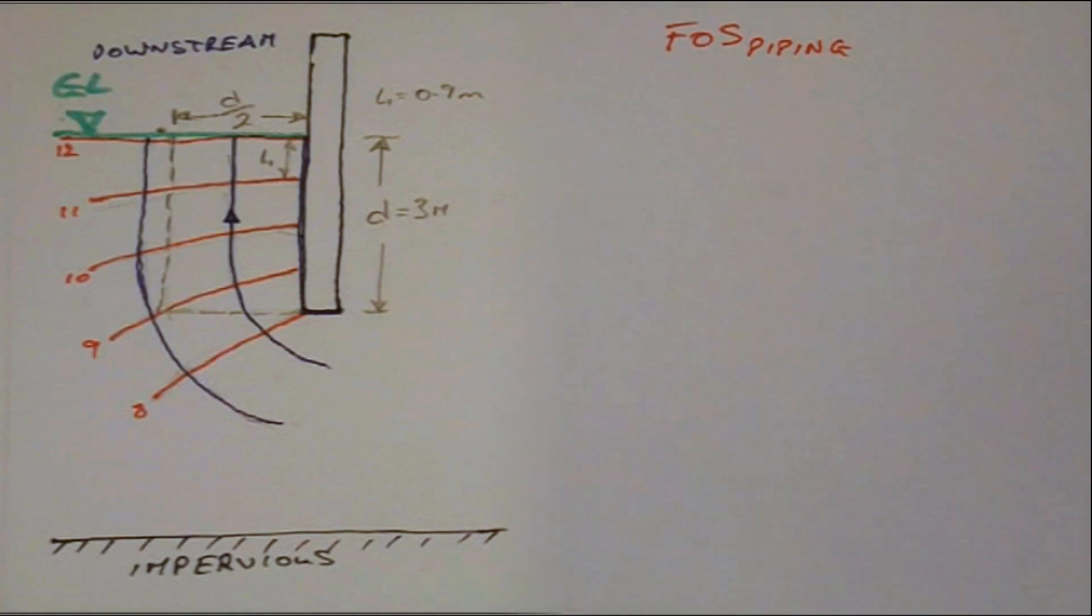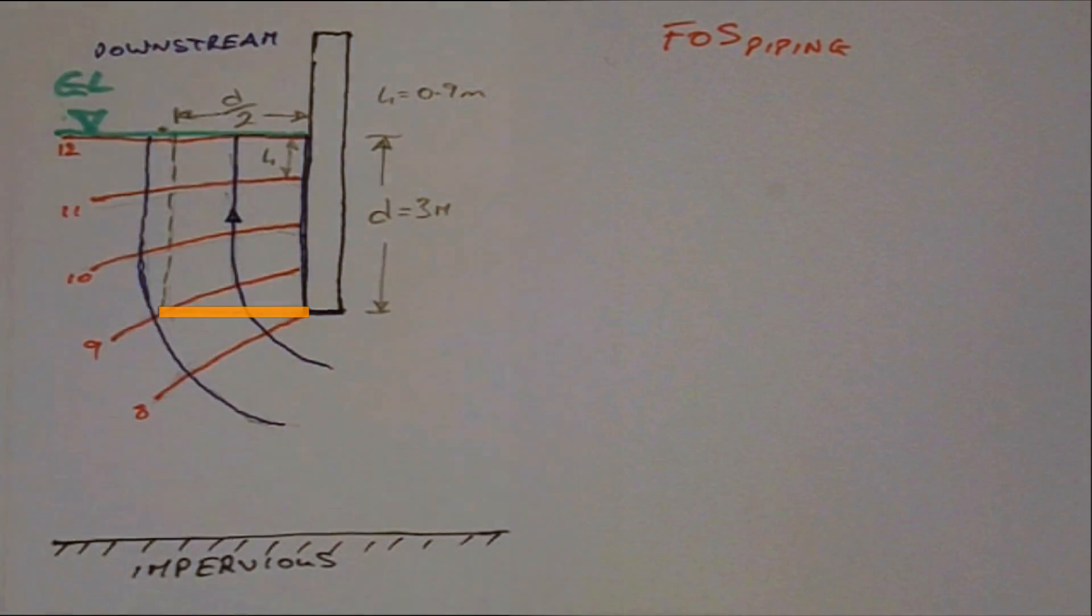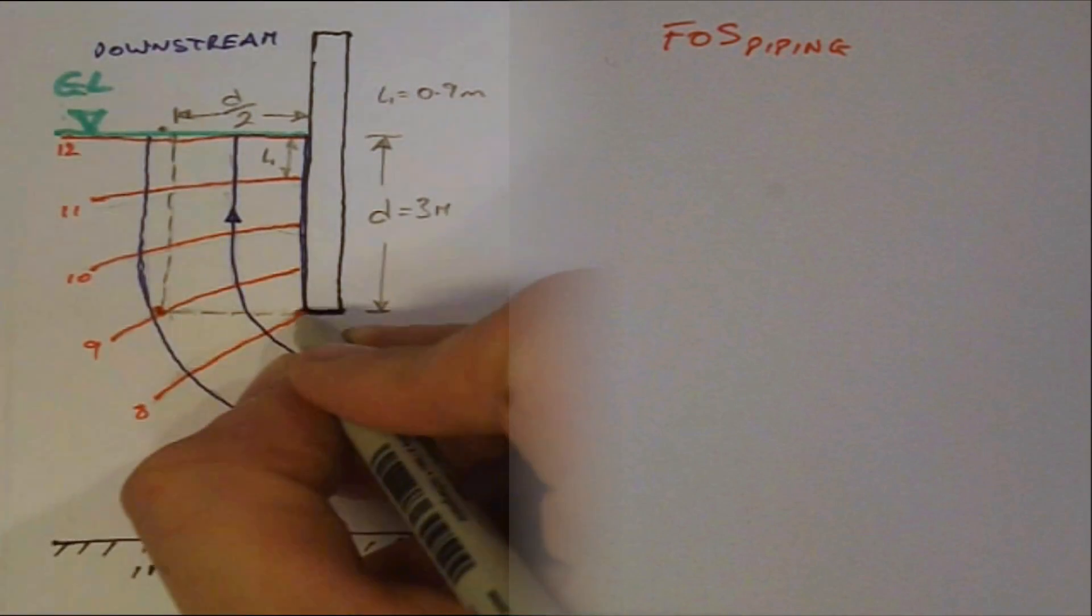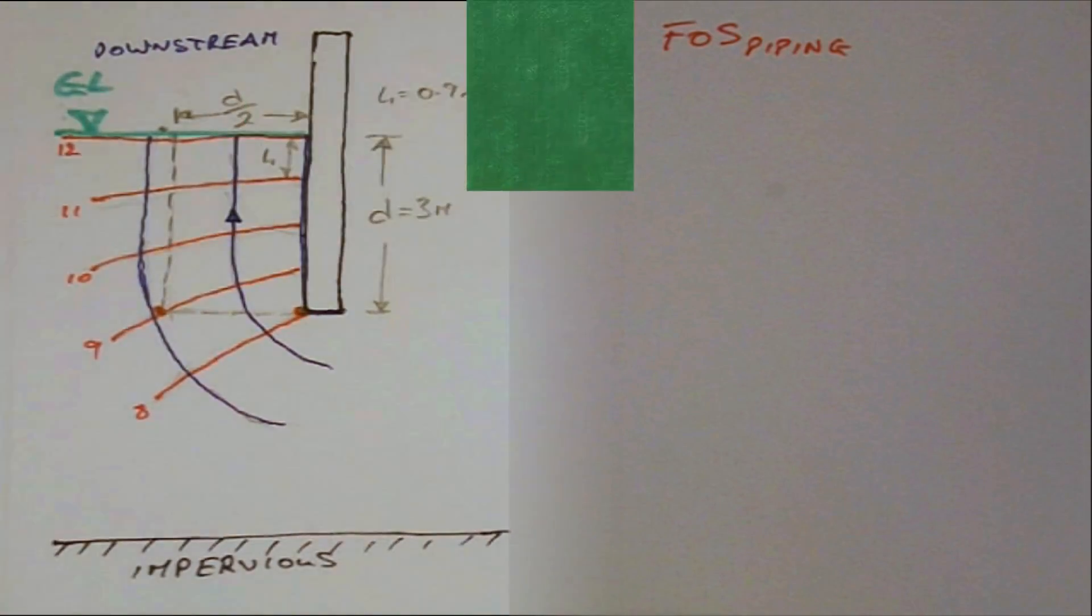We need to calculate the mean head HM acting along the base of the prism. We note from the enlarged detail that the lower outermost corner of the prism intersects equipotential line 9, and the internal corner touching the sheet pile intersects equipotential 8.